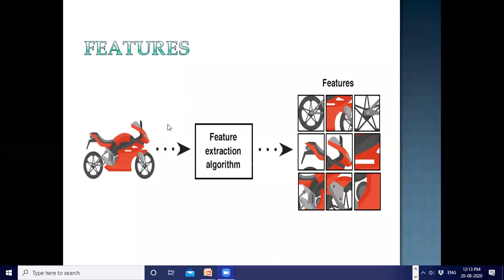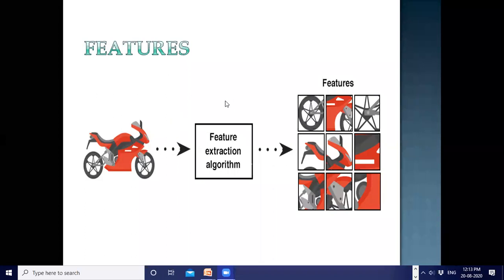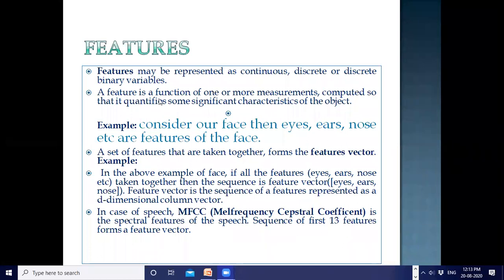So as you can see, the features of a bike can be different, right? So it is very important to extract the individual features of every object which is in our current picture, okay? So that is feature. Now how we define them? The feature is a function of one or more...